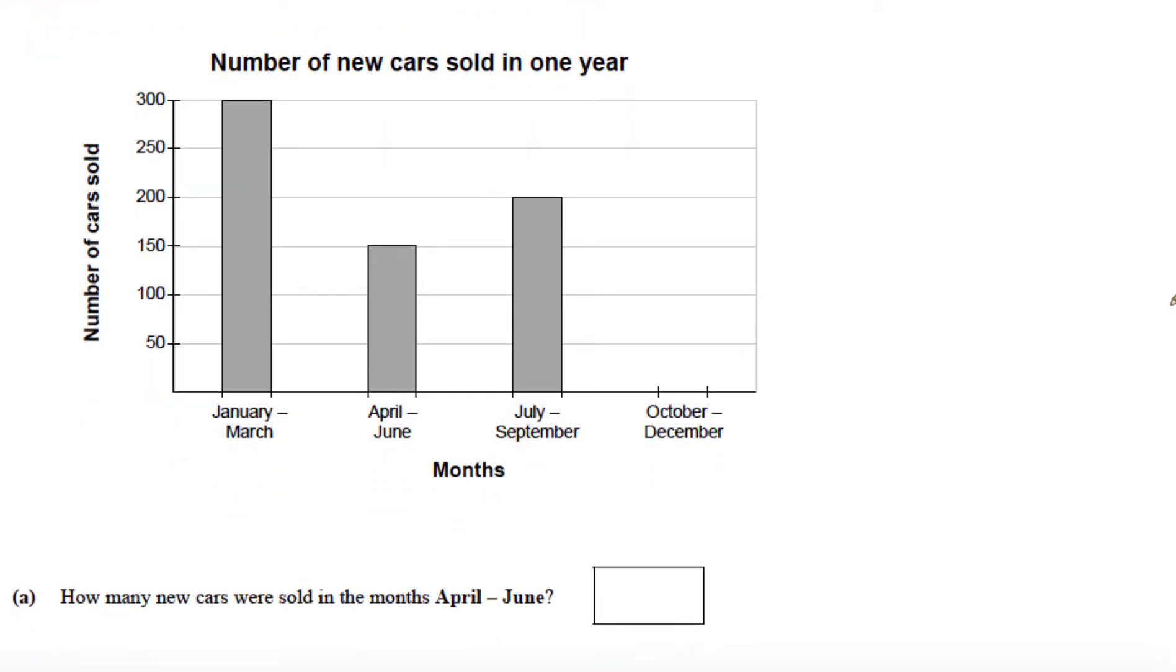So the first question says, how many new cars were sold in the months April to June? So if we look for our months April to June, the number of new cars is 150.